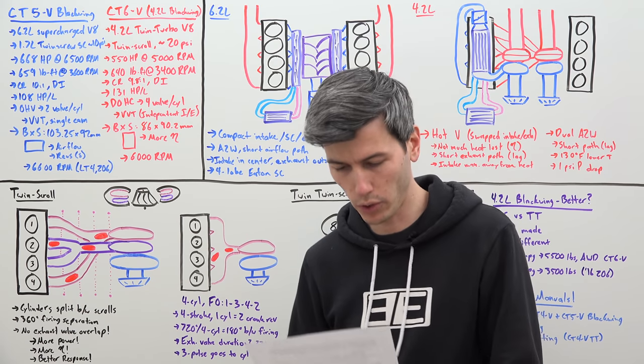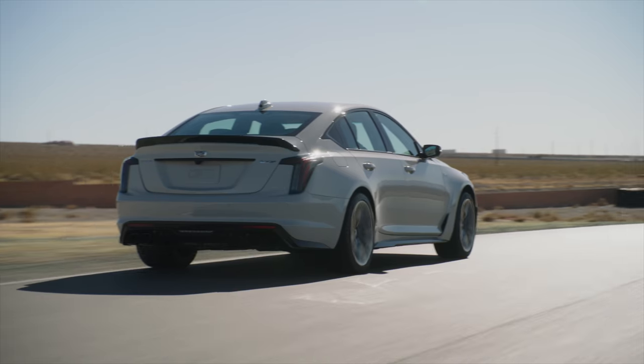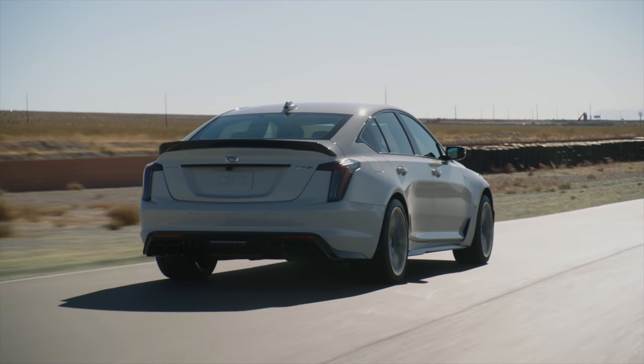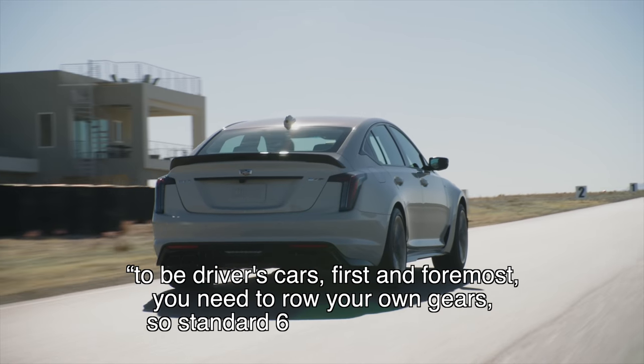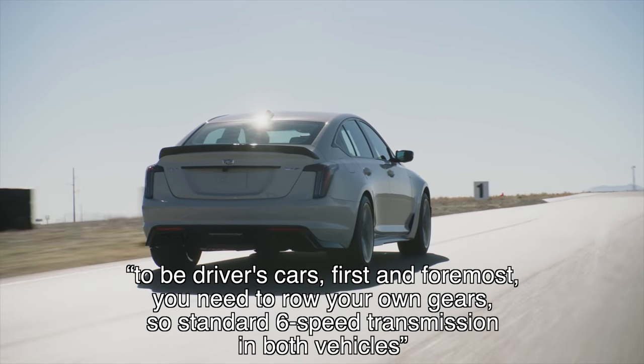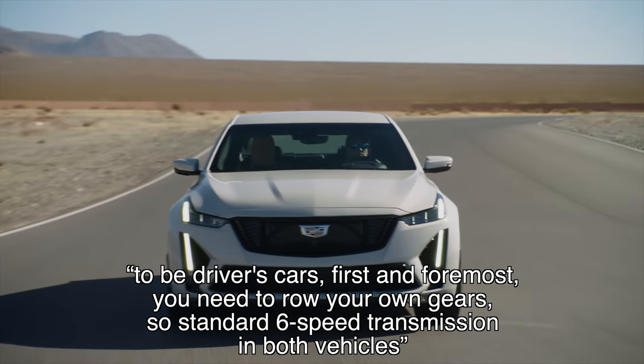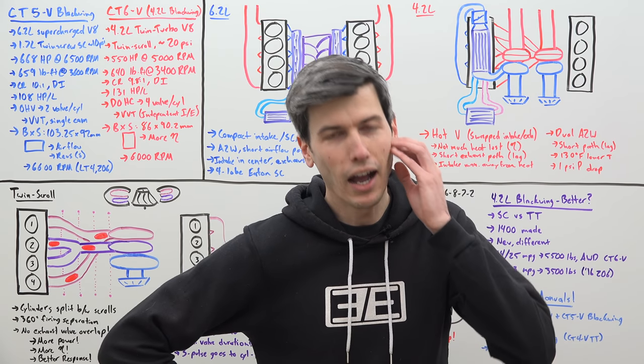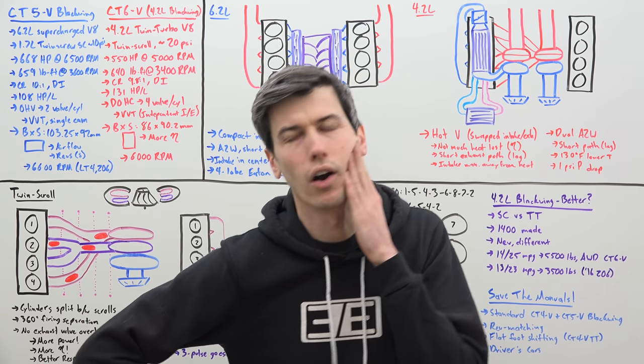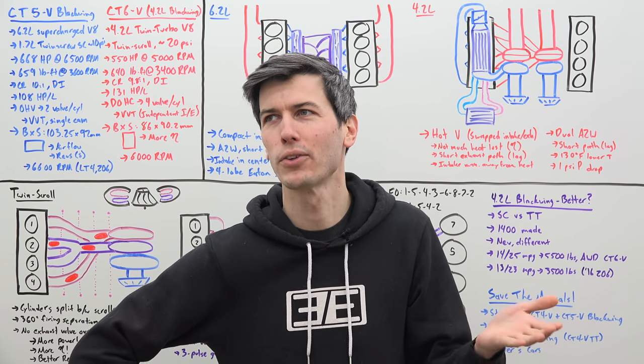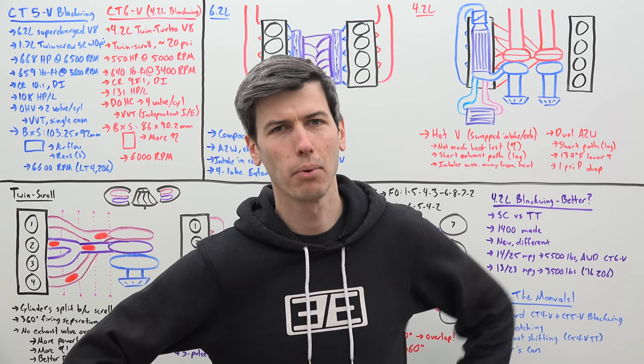And because I just love trolling far too much, here's a quote from an executive chief engineer at GM who during the reveal of the CT5V Blackwing stated, to be driver's cars, first and foremost, you need to row your own gears. So standard six speed transmission in both vehicles. So there you have it. I was wondering if the C8 Corvette was a driver's car. But I guess it's not. And I guess in 2035, I guess they won't have any driver's cars, which is kind of disappointing.